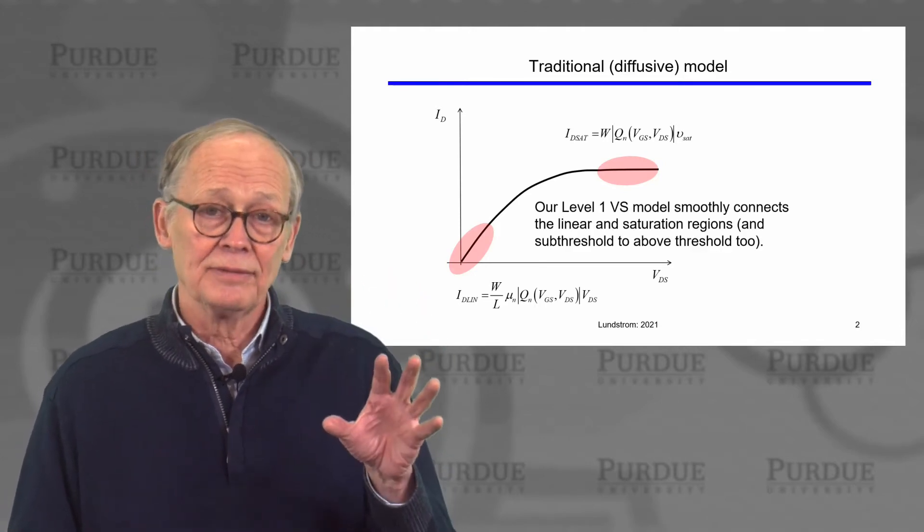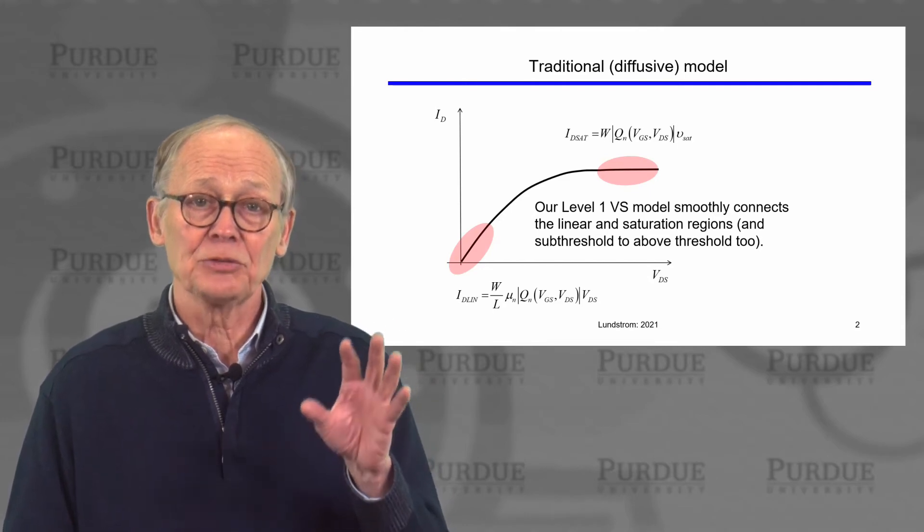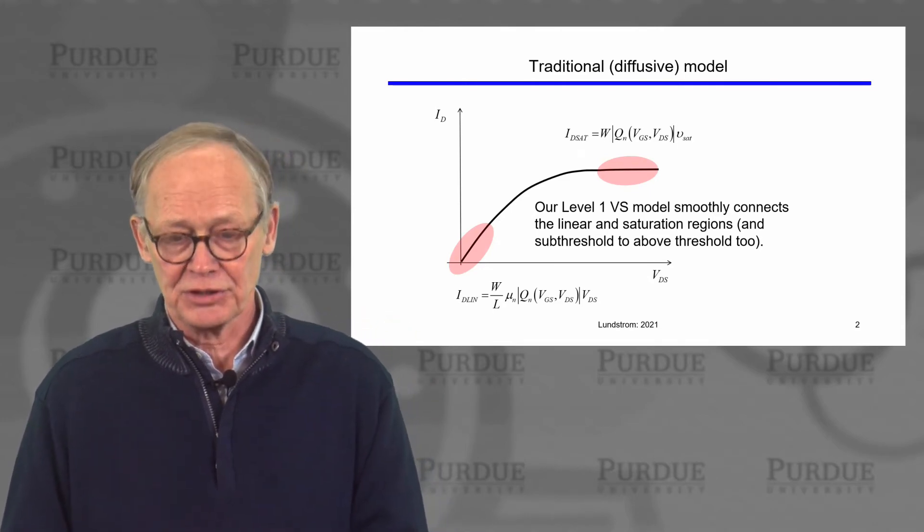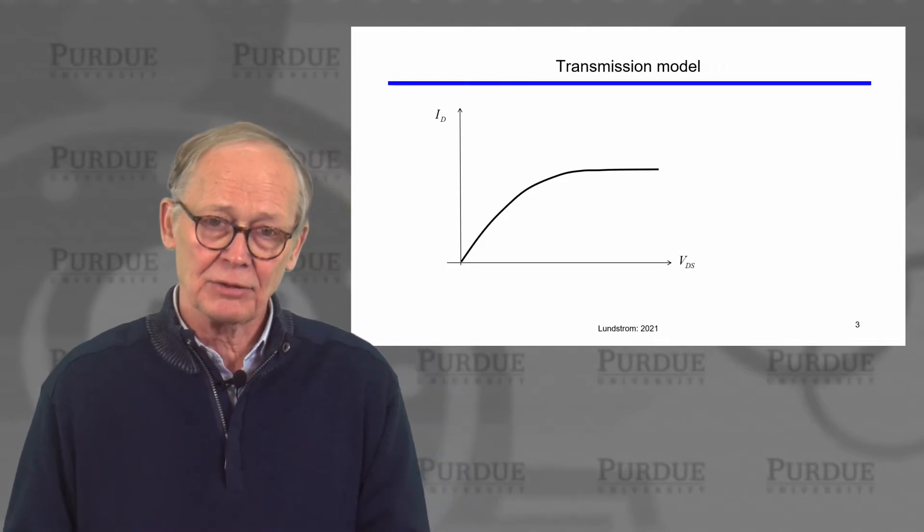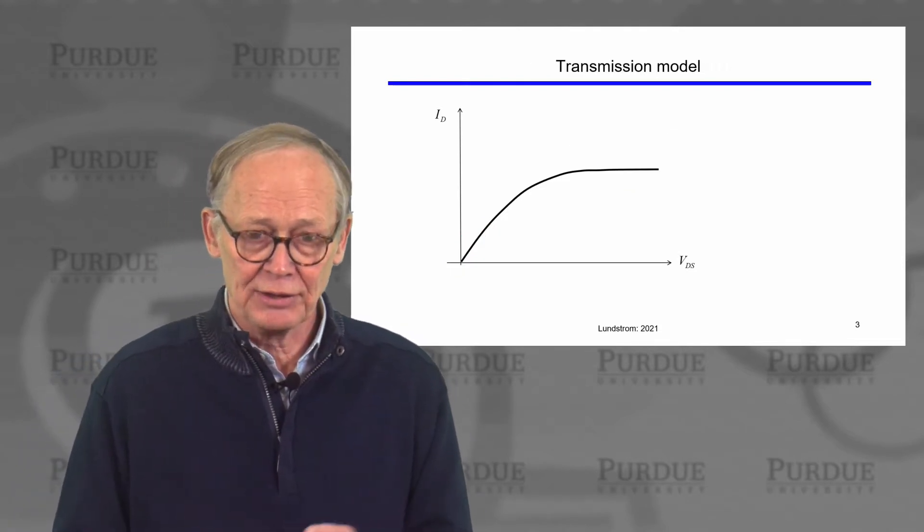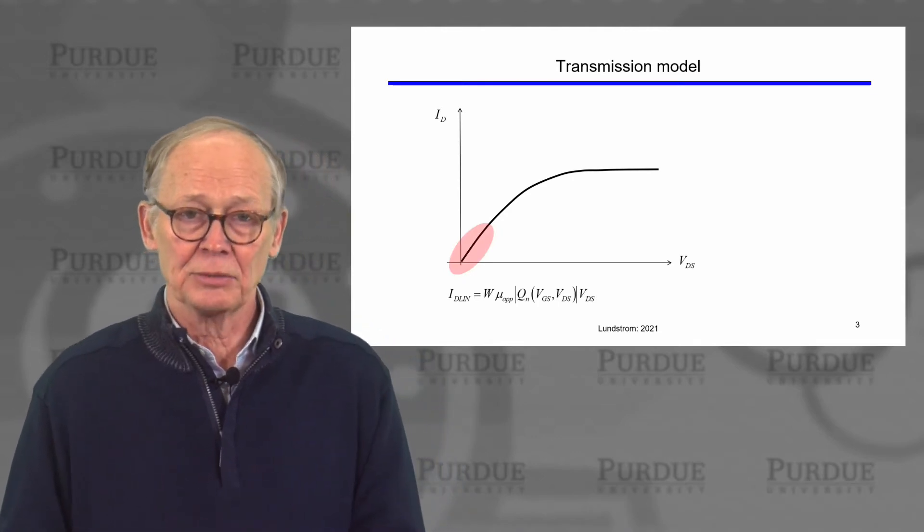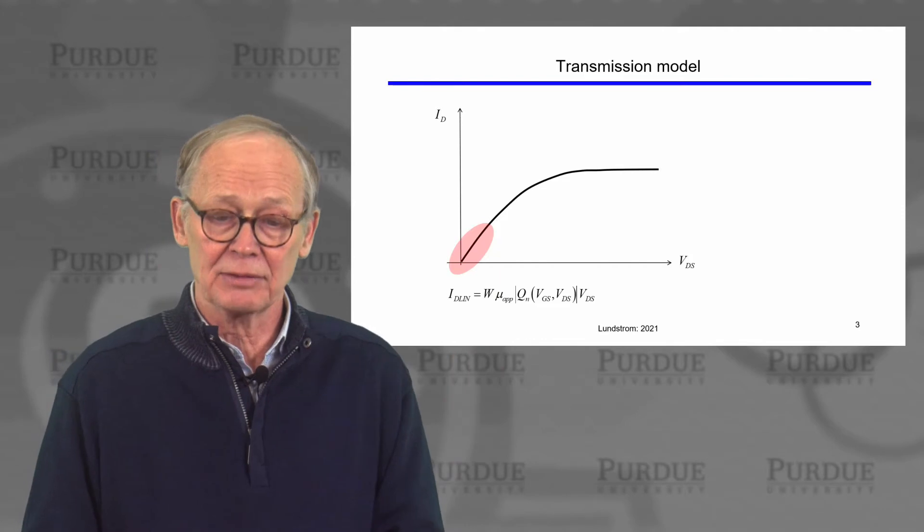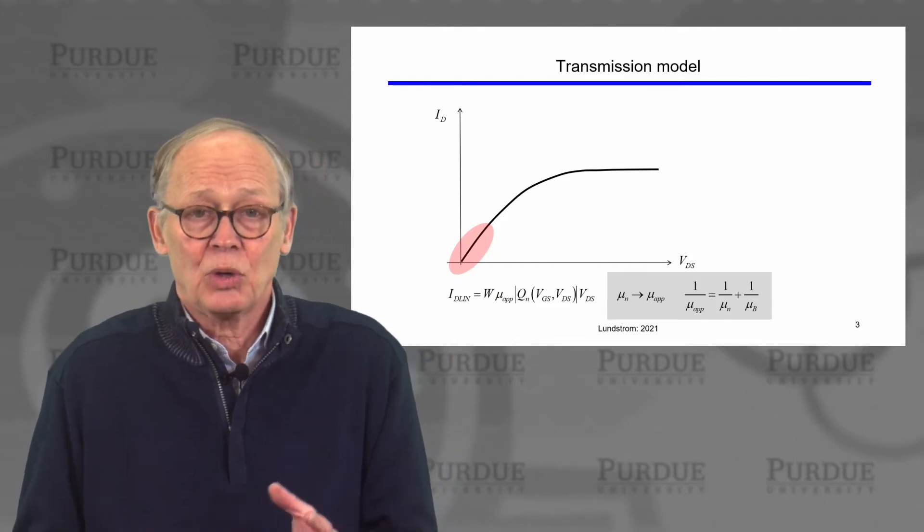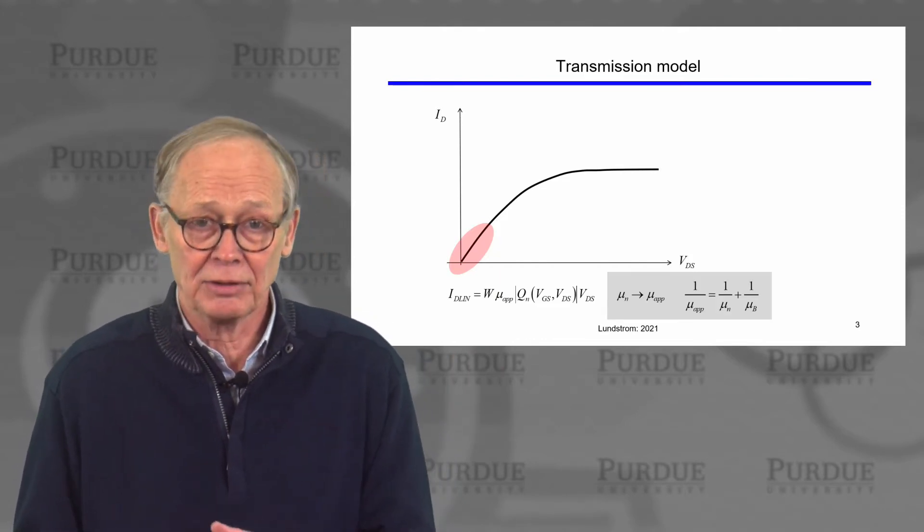Our level 1 virtual source model then smoothly connected the linear and saturation regimes. We have a transmission model now that describes short channel devices all the way to the ballistic limit. All we need to do is to replace the scattering limited mobility by a quantity that we called the apparent mobility.